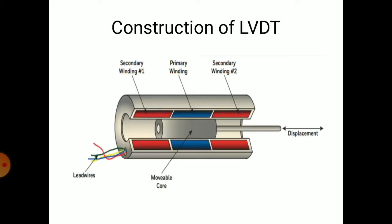Let us see the construction of LVDT. There are two types of windings. The blue color part is Primary Winding, and the red color ones are Secondary Winding 1 and Secondary Winding 2. So there are two Secondary Windings and one Primary Winding, and all the windings are kept in one outer casing. Inside those windings there is a moveable core which moves. Displacement is given to this core, and the lead wires on the side connect the windings to the output device.